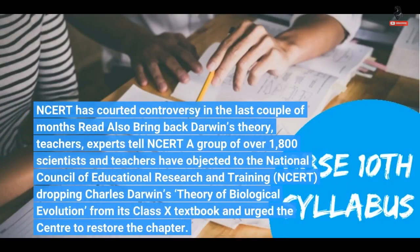NCERT has quoted controversy in the last couple of months. A group of over 1,800 scientists and teachers have objected to the National Council of Educational Research and Training, NCERT, dropping Charles Darwin's theory of biology, and called to bring back Darwin's theory.